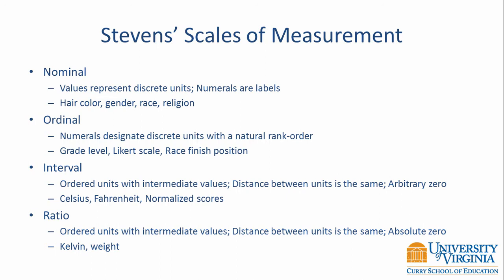Nominal data are the most basic type. Values represent discrete units and the numerals are simply labels. Examples include hair color, gender, race, or religion. We can use those labels directly and just write down the hair color as our data points, or we can use numbers or letters as symbols to represent those values.